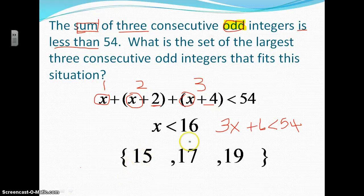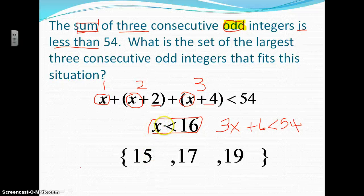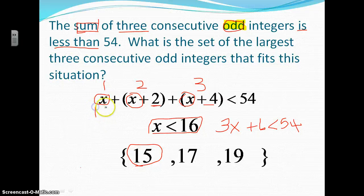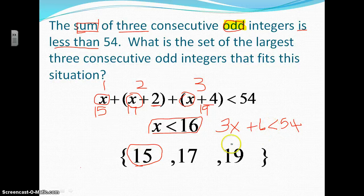So they're going to be 15 — and notice that 16 is an even number, so that's why it's not one of our answers. X has to be less than 16, so we go to the odd number that is less than 16, which is 15. Then the next odd number is 17, and then 19. So 15 is my x, 17 is my second number, and 19 is my third number. Because 16 is not an odd number, 16 could not be our answer.